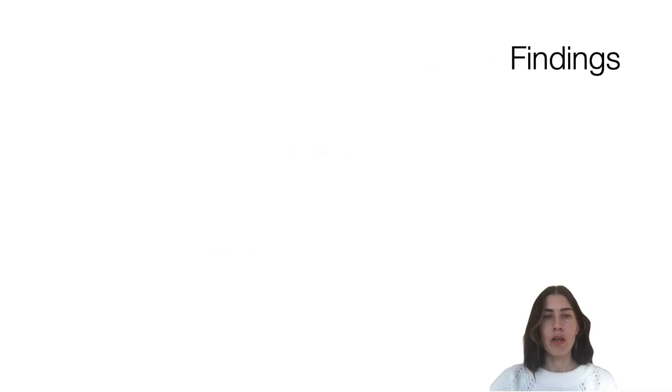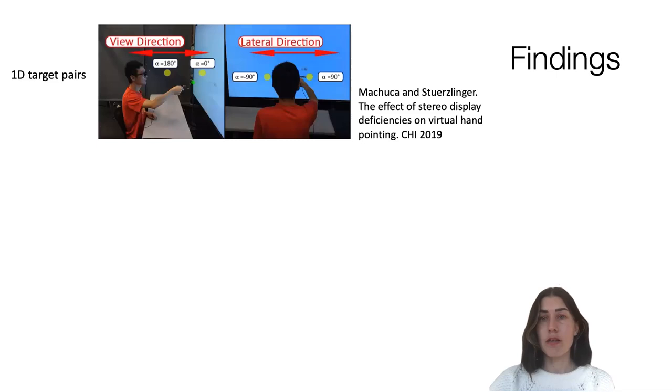One of our key findings was that such a seemingly mundane decision as laying out targets for selection tasks is indeed difficult in the context of VR. The strategies studies used included target pairs, like in Fitz's reciprocal tapping task, but placed here on frontal and lateral axis in front of the participant.